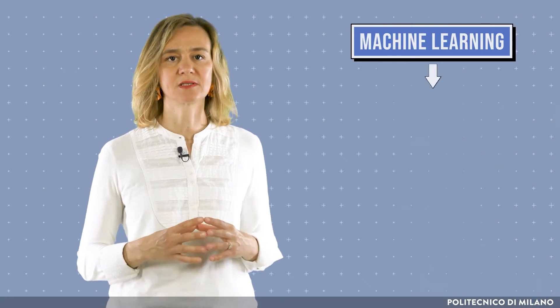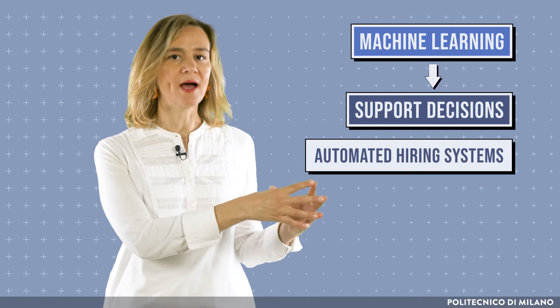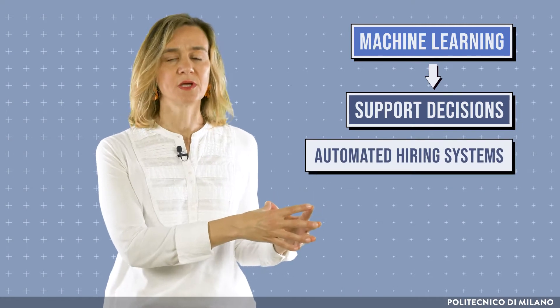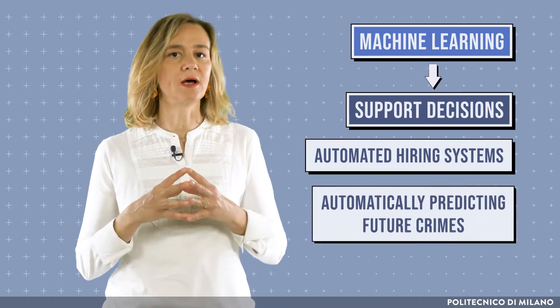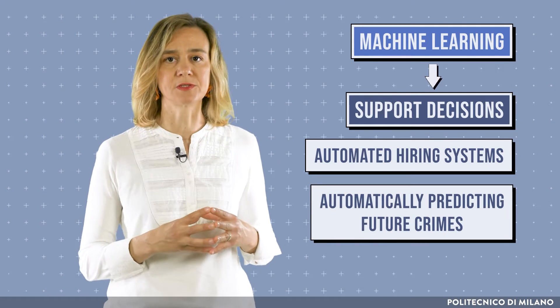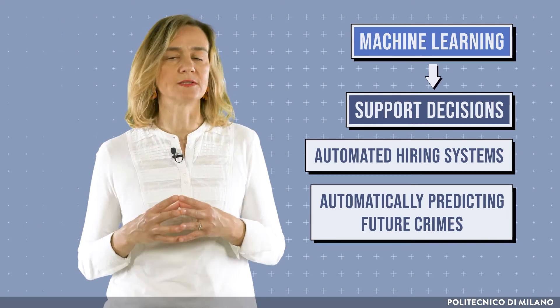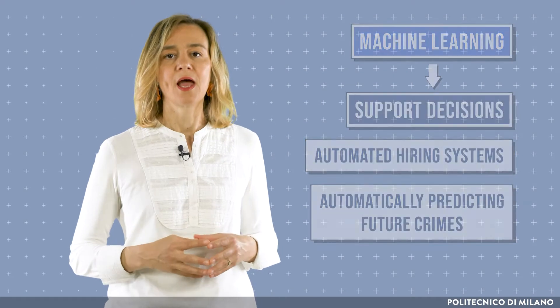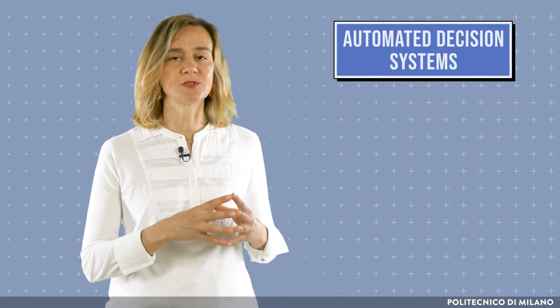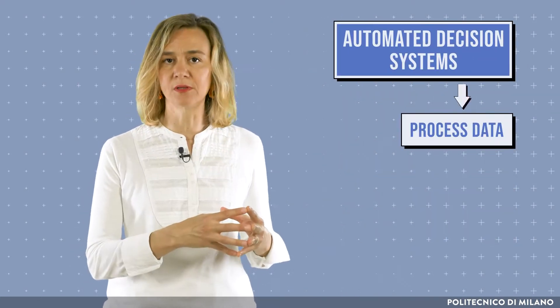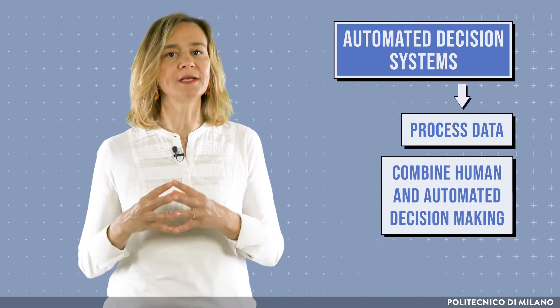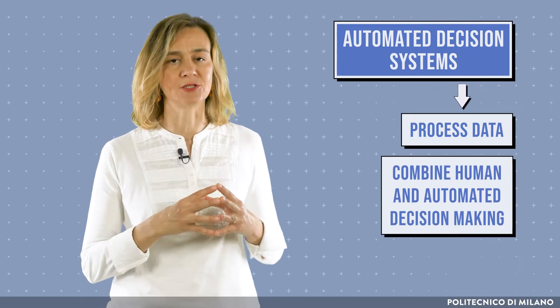Artificial intelligence, and in particular machine learning, is used nowadays to support decisions in many different fields, from automated hiring systems to commercial tools for automatically predicting some categories of future crimes used in sentencing decisions. Automatic decision systems process data about people and combine human and automated decision-making.